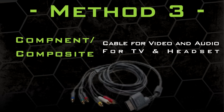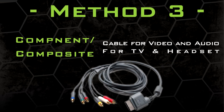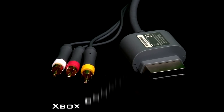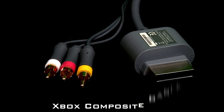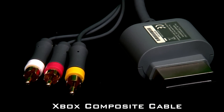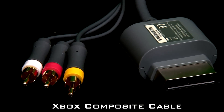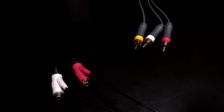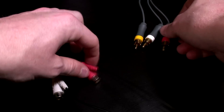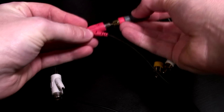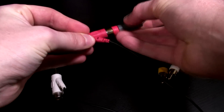Method 3 is for those of you who are using an Xbox composite or component AV cable to send video and audio to your TV. For this method, just locate the red and white phono connectors on either the composite or component cable, and plug the headset cables into the top of the RCA audio adapter.